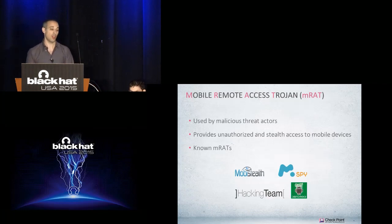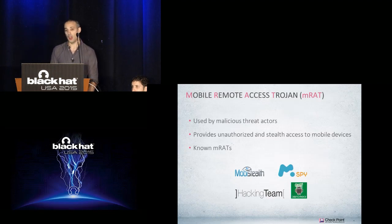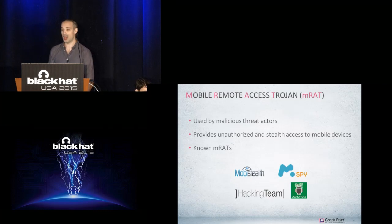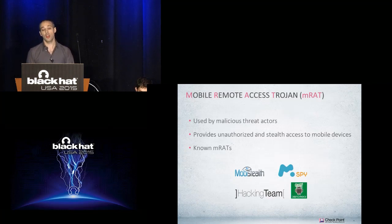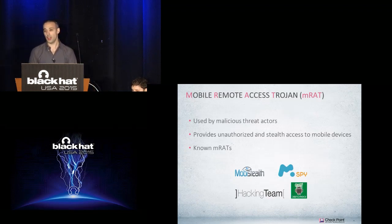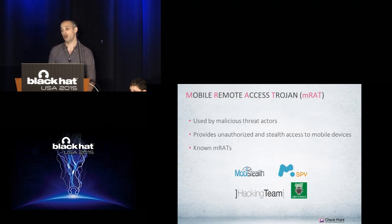I am now going to discuss about mobile remote access Trojans, or mRATs. An mRAT is a tool that can be used by an attacker to take full control of your device. Once he is able to infect your device with this kind of tool, he can basically do anything — read your email, your contacts, your text messages — and he can also use the sensors of the device. For example, he can use the GPS to track your location or the microphone to listen to calls happening in the room. There are many known types of mRATs: low-end vendors like Mobistealth or AmSpy that you can purchase online for $100.